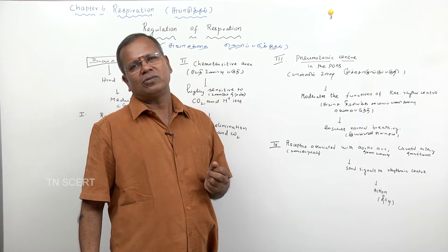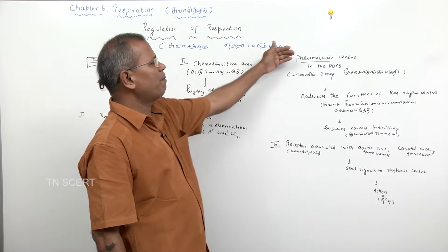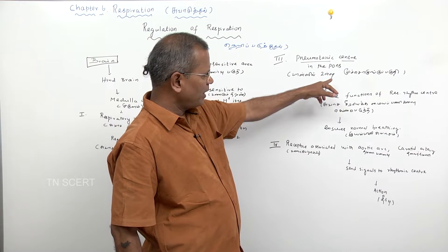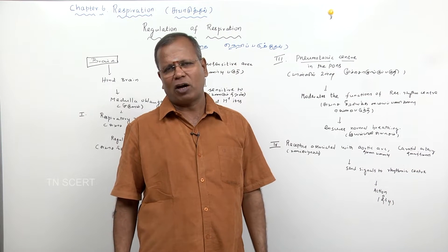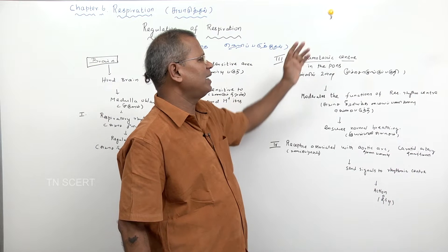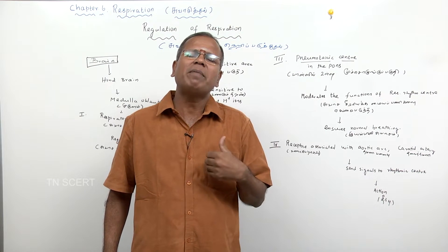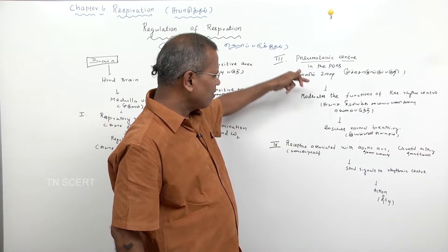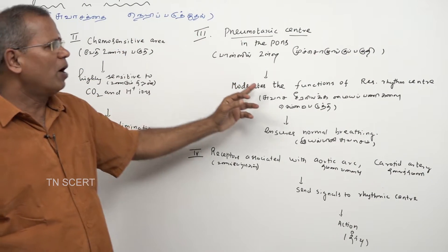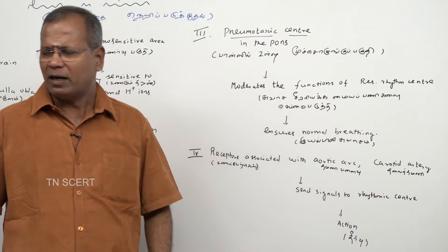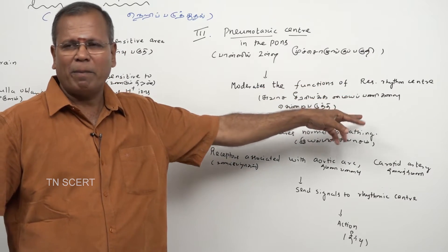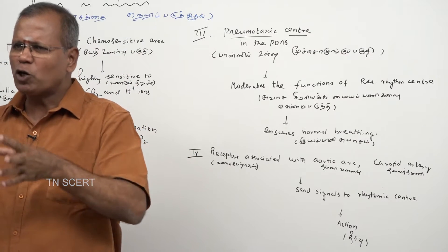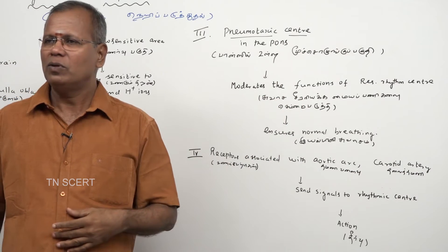The Pons, Pons Varoli, possesses pneumotaxic center. The Pons Varoli's pneumotaxic center helps to control the rhythmic breathing. What is the role? The main function of this pneumotaxic center is to moderate the functions of respiratory rhythm center.